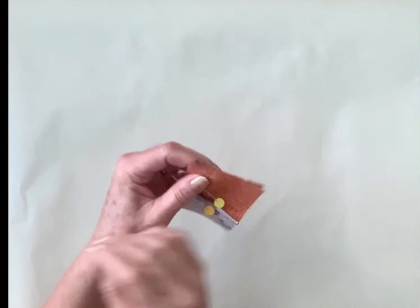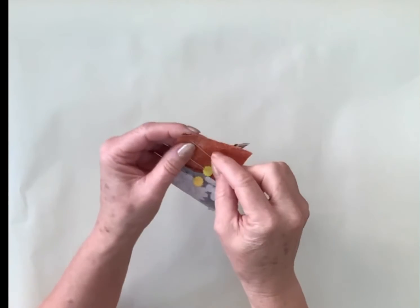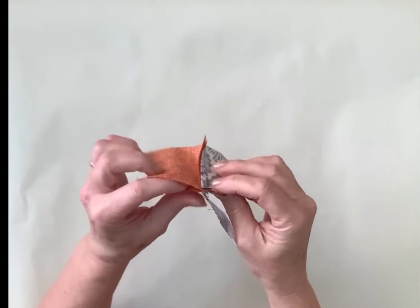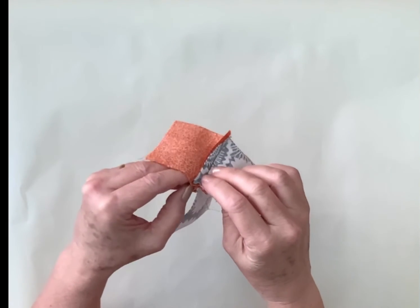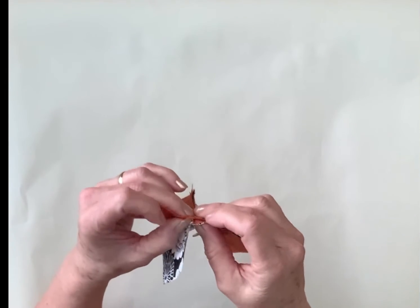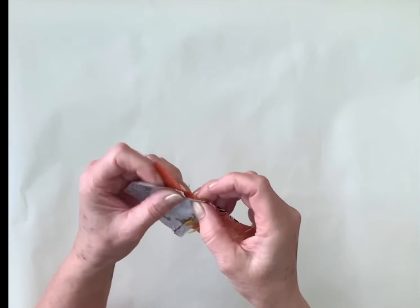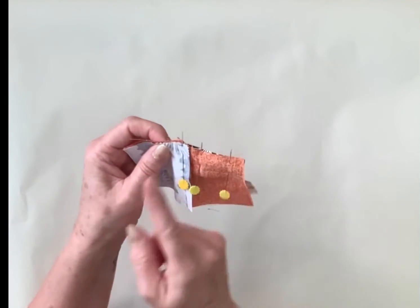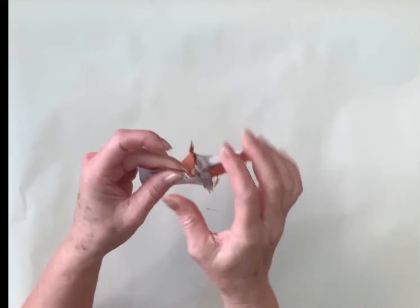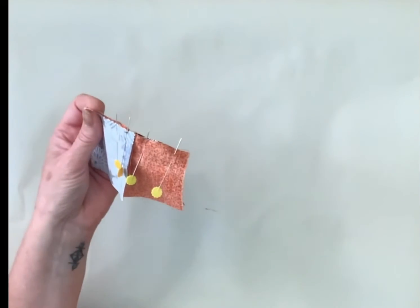And I do exactly the same this side. I open this out, make sure that the two edges are together, make sure it's together with the back piece and the front, pop another pin and then another pin on the end.